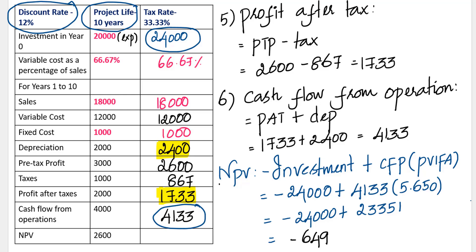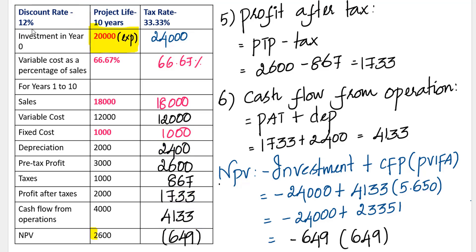Whenever we arrive at a minus sum, we don't denote it with a minus sign — we use brackets to indicate a negative cash flow. With 20,000 investment we had a profit of 2,600, and when we increase the investment to 24,000, we have a loss of 649. You can see how sensitive the net present value is when we change the key variable of investment.